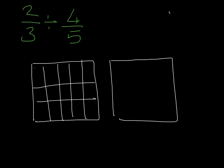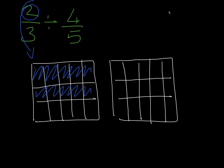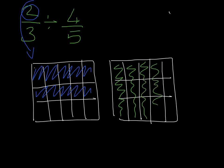You have to draw 2 buildings. My second building also has 3 floors and 5 rooms. The first numerator goes into the first building, so I need to show 2 thirds. The horizontal rows are filled in — that's 1 third and 2 thirds. In my second building, I fill in the numerator from my second fraction, which is 4 fifths: 1 fifth, 2 fifths, 3 fifths, and 4 fifths.